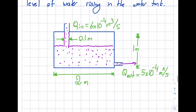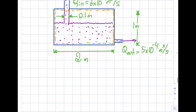In the first approach, I pick a control volume that encompasses the entire tank. The next step is to write the assumptions. Is this steady? Well, the water level is going up, so no — this is not steady. I cannot say steady.